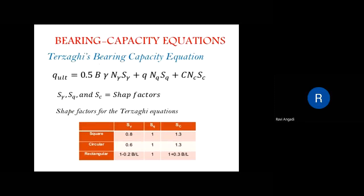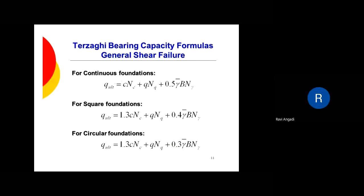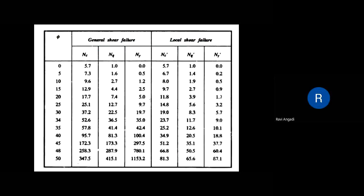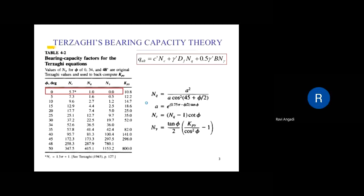This is the generalized Terzaghi's bearing capacity equation — you need to remember this. The formula applies for a continuous foundation, and there are separate forms for square and circular foundations. You also need to know how to take the values of Nc, Nq, and N-gamma.